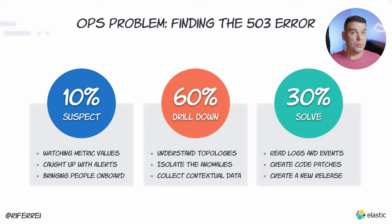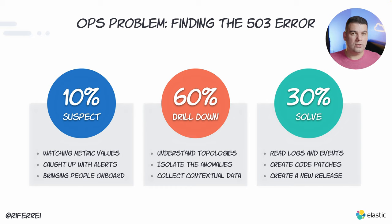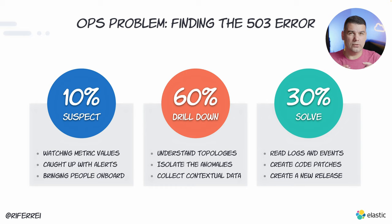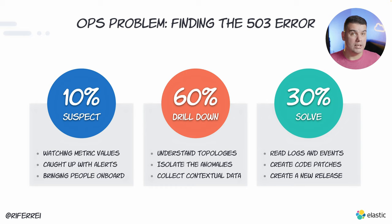So your customer got a 503 error. What happens next? First comes what we call the suspect phase, where you and your development team sit down and try to replicate and reproduce the problem. If you can reproduce it, the next step is the drill down — evaluating all the services, layers, and moving parts to find where the problem is occurring. Then comes the fix phase, where you produce a patch or code fix and release a new version. All of this takes considerable time, and that's one of the key values of distributed tracing.